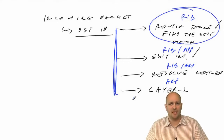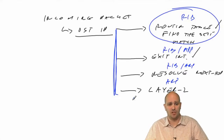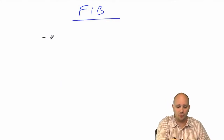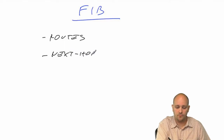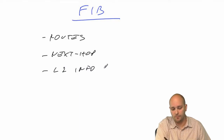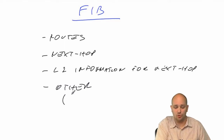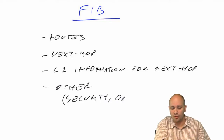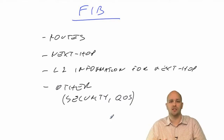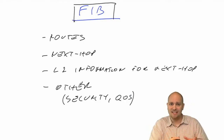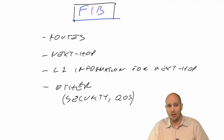Cisco created a Forwarding Information Base, or FIB, which is a database containing information about routes, next hops, layer 2 information for next hops, and other pieces of information related to security (like access lists) and QoS markings to apply to packets or frames being generated. This separate FIB is what we use when talking about the forwarding plane on the router.